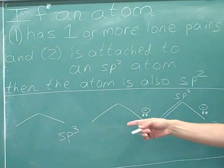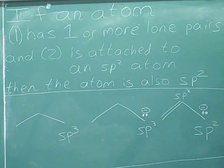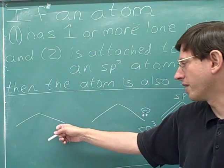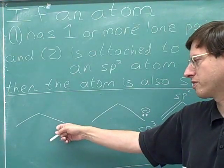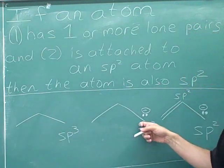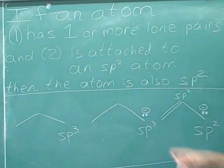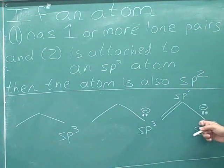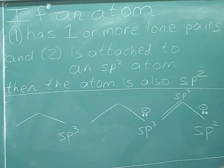It would be a good idea to compare these three examples. Here we have a normal sp3 carbon, another normal sp3 carbon, but in this third one the exception kicks in and it's going to be sp2.